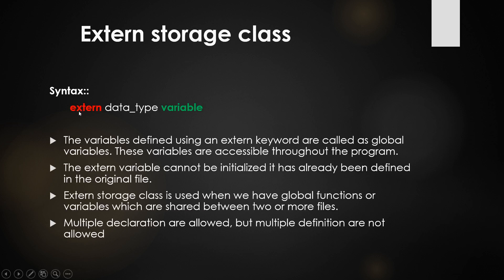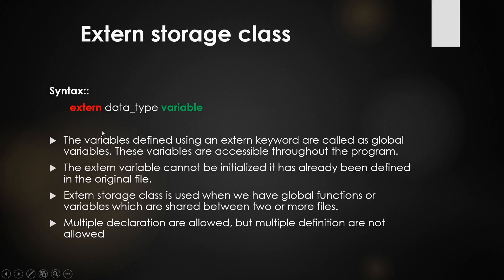External storage class — the syntax uses the extern keyword, followed by data type and variable. Variables defined using the extern keyword are called global variables. The main use of the extern storage class is accessing a variable across files. For example, if you have int a equal to 7 in main.c, in a second file you can access a by declaring extern int a. Multiple declarations are allowed for extern, but multiple definitions are not allowed.